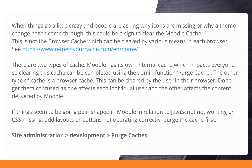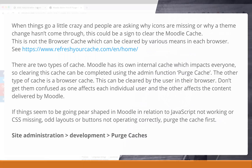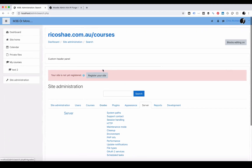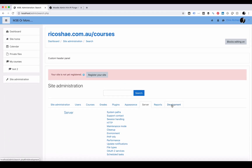So if you need to go in and clear the Moodle cache yourself, you can do this by going to Site Administration, Development, and Purge Caches. Let's have a look — go to Moodle, go to Site Administration, make sure you're logged in as an administrator, select Development, and select Purge Caches.